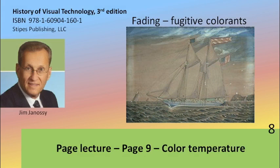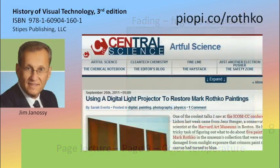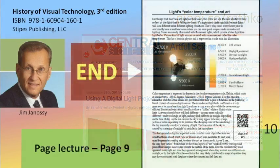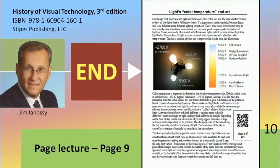There is a very interesting website that I've put on the slide at the end of this series. If you want to pursue the idea of how restoration can be done when light has affected and faded pigments, investigate the website I refer you to there. A very interesting way of restoring the original appearance of a painting has been undertaken by way of the light used to illuminate it — a fascinating way that the two subjects of fading and color temperature tie together in the world of art.